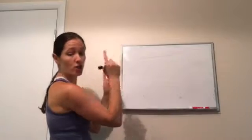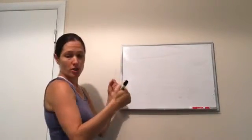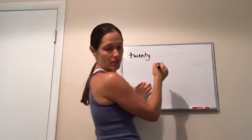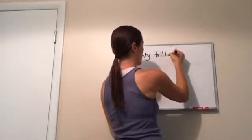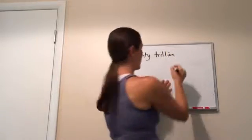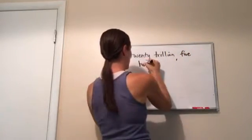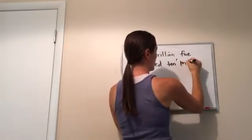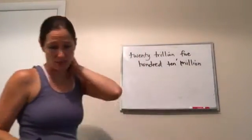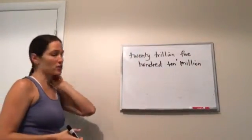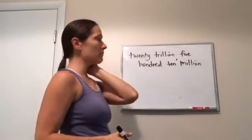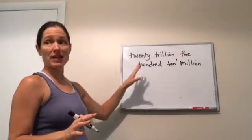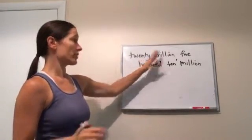All right, last thing. Use digits, which are numbers, use digits to write this. Be thinking in your head how you would do this. You can even do it on your paper if you want to. All right. That's what they tell me. Use digits to write twenty trillion, five hundred ten million. Now your very first step in this is, what's the biggest number in here? Trillions. Trillions.